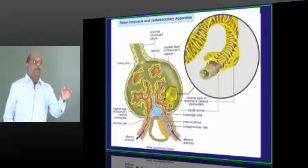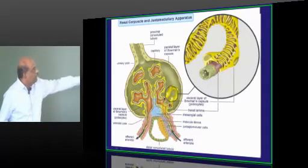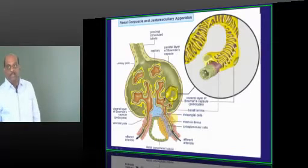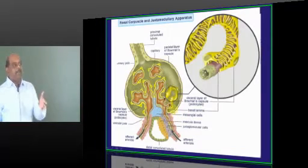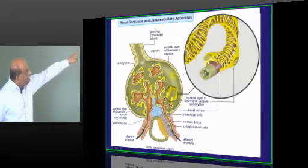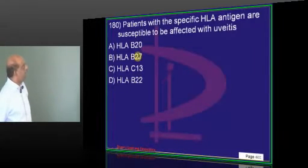In collapsing type of glomerulopathy of HIV, what proliferates? Visceral layer of the Bowman's capsule podocytes. In crescentic glomerulonephritis, crescents are because of the proliferation of parietal layer of the Bowman's capsule, that is what you need to basically appreciate.